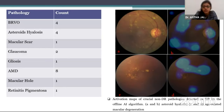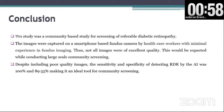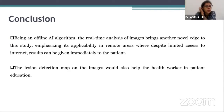This is how the AI picked up asteroid hyalosis and cases of bruises. To conclude, this was a community-based study for screening of referable diabetic retinopathy. Images were captured on a smartphone-based fundus camera by health workers with minimal experience in imaging, so not all images were of excellent quality — which is expected in large-scale community screening. Despite including poor quality images, the sensitivity and specificity of detecting referable DR by the AI was 100% and 89.5%. Being an offline AI algorithm, real-time analysis of images is a novel feature, emphasizing applicability in remote areas where, despite limited internet access, results can be given immediately to the patient. The lesion detection map would also help health workers in patient education.